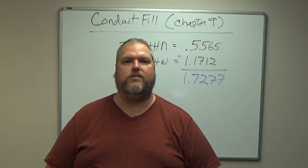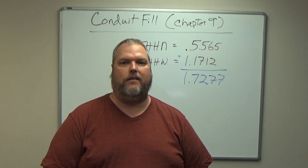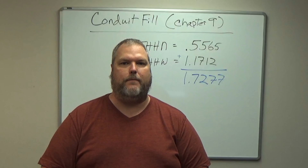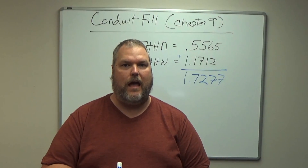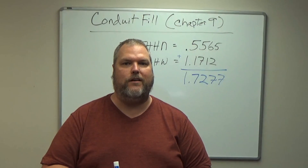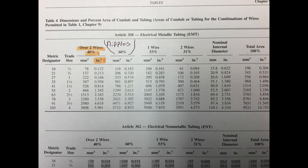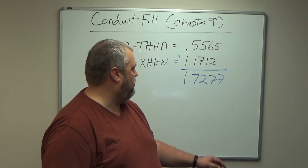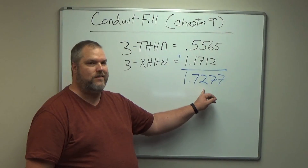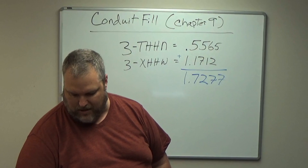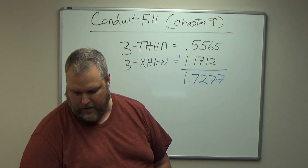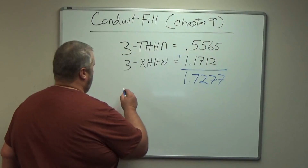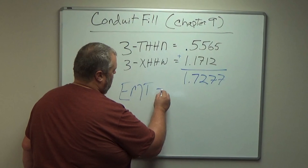Now we have to go back to chapter 9, table 4, look under EMT, find our area at 40%, and run down the square-inch column until we find the right size. We see 1.342 — but 1.342 is smaller than 1.7277, so we have to go to the next available size, which is 2.343, which corresponds to EMT two-and-a-half inch conduit.